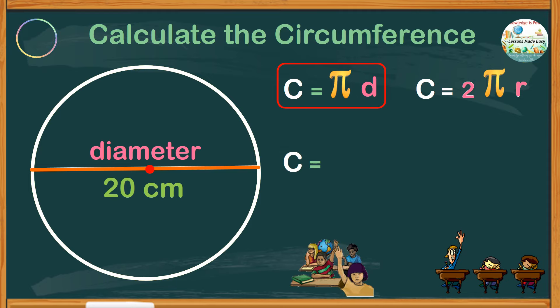Circumference equals pi. Let's substitute the value of pi, which is 3.14, times the diameter, which is 20 centimeters.